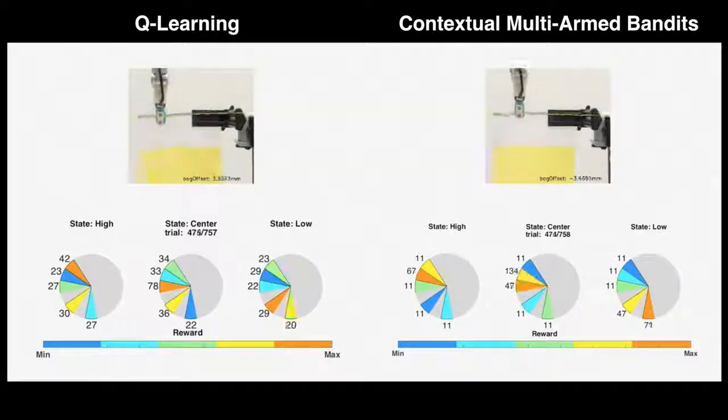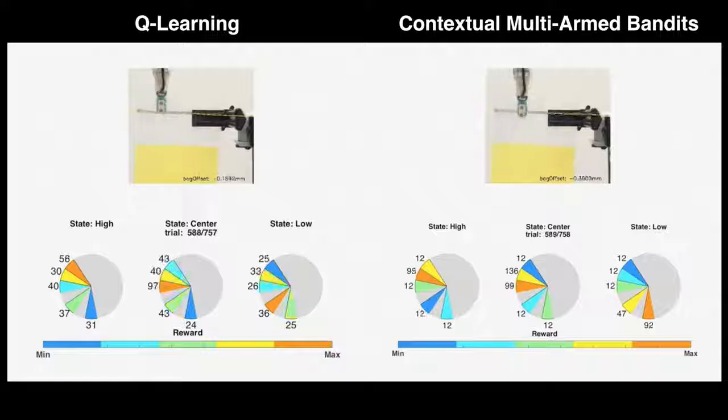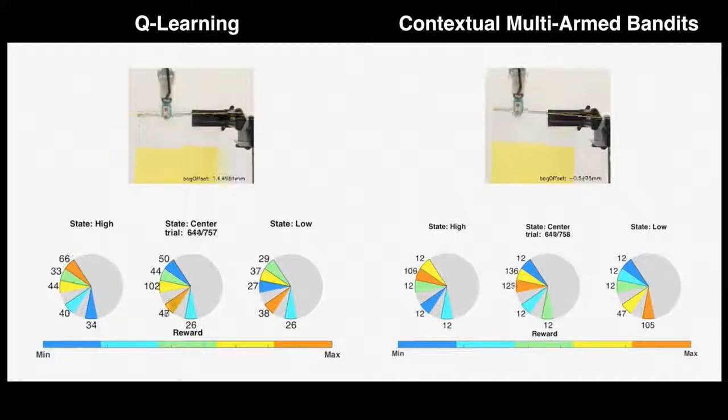While the Q-Learning parameters could possibly be manually tuned to improve performance, all manual tuning is sidestepped through the use of the more advanced Contextual Multi-Armed Bandit learner.